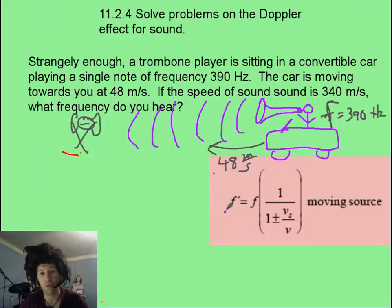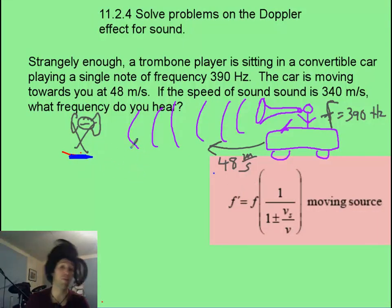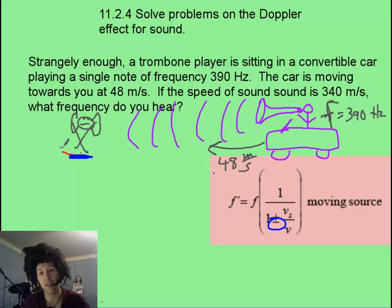And the correct equation to use is this one here, the moving source. And you should be deciding the frequency that you hear, is it going to be bigger or smaller? It's coming towards them. Waves are getting scrunched up. So it has to be a higher frequency, which means you need to use the negative sign to make the denominator lower. Now pause it and see if we can solve it correctly.